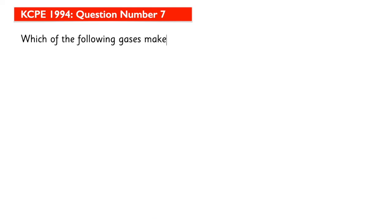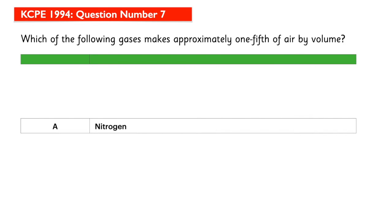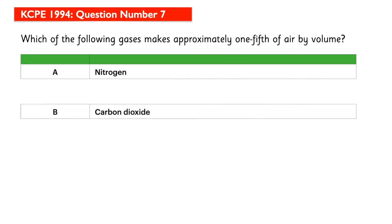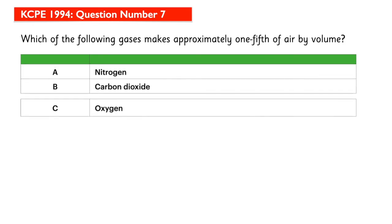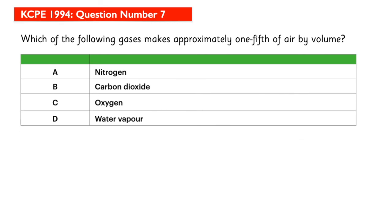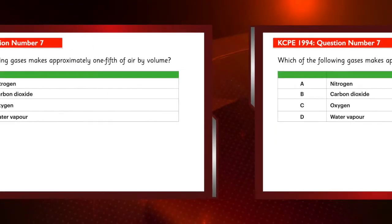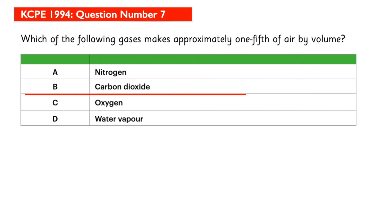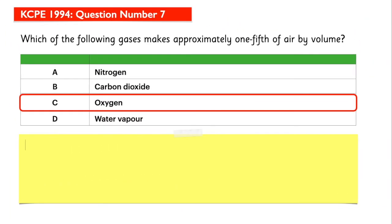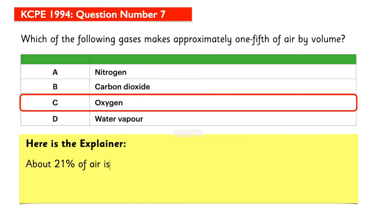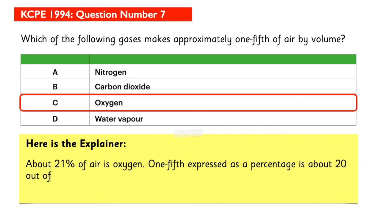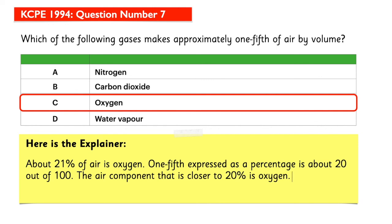Which of the following gases makes approximately one-fifth of air by volume? The answer is C. Here is the explainer: about 21% of air is oxygen. One-fifth expressed as a percentage is about 20 out of 100. The air component that is closer to 20% is oxygen.